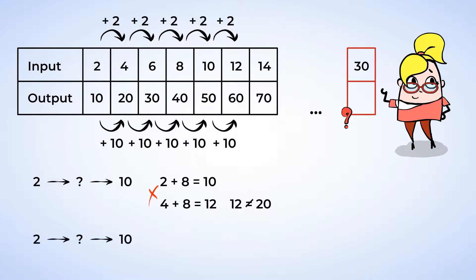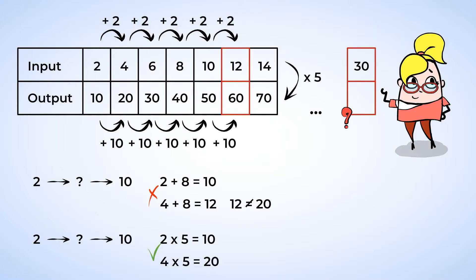What else could we try? 2 times 5 is 10 — let's try multiplying by 5. 4 times 5 is 20, and that matches. Let's check one more: if the input is 12, then the output should be 60, because 12 times 5 is 60. And yes, it works. So to find the output, we can multiply the input by 5. We found a shortcut specific to this pattern. Back to our input of 30: 30 times 5 is 150, so the output would be 150.